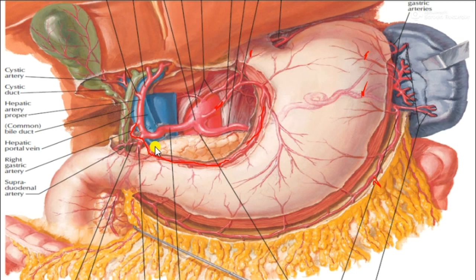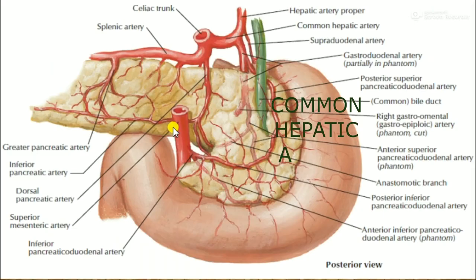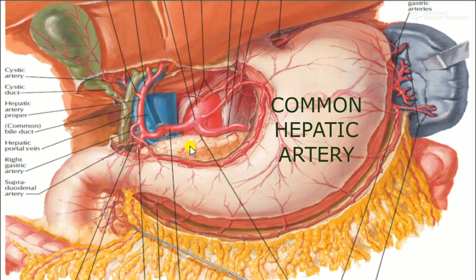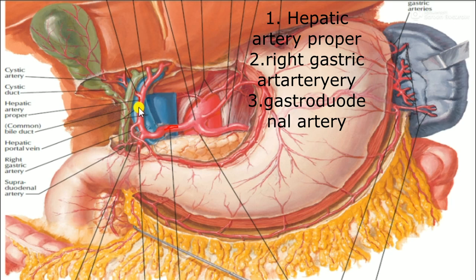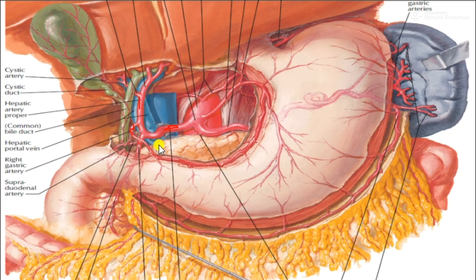Next we study the common hepatic artery. It has mainly three branches: the hepatic artery proper, the right gastric artery, and the gastroduodenal artery.